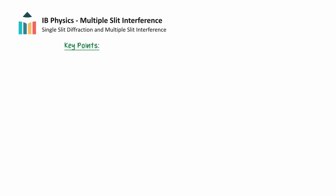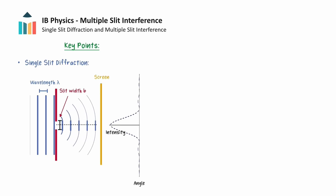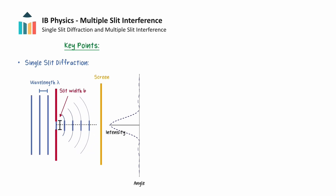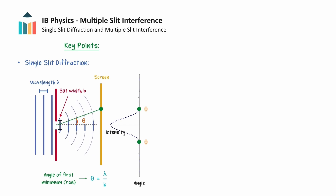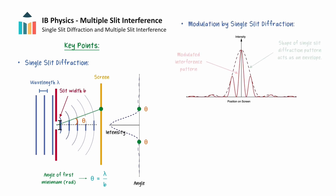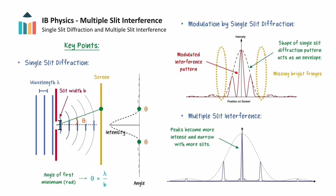We will now provide a final summary. Light passing through a narrow single slit of width b produces a diffraction pattern, and the angle theta for the first minimum is given by theta equals lambda over b. This single slit diffraction envelope modulates the intensity of interference patterns from double and multiple slits, causing some peaks to be missing. Having light pass through more slits causes peaks to become more intense and narrow, as used in diffraction gratings. The angles at which interference maxima occur in multiple slit interference can be determined using d sin theta equals n lambda.